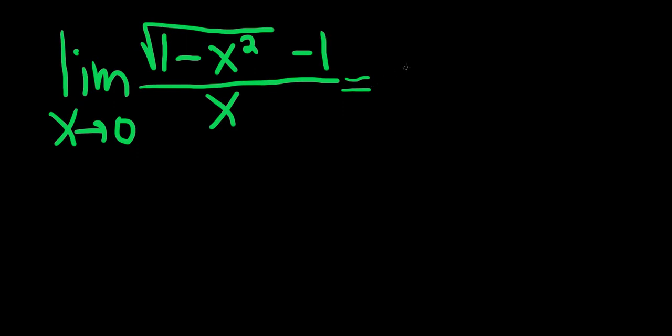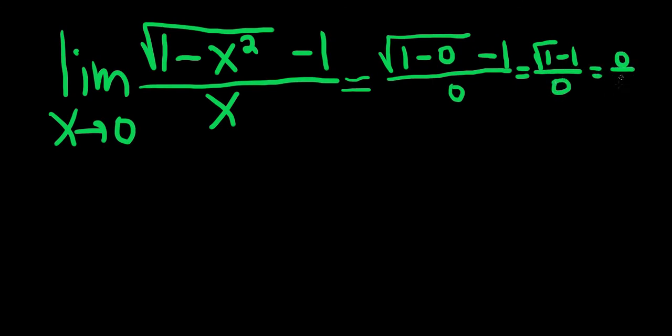If we plug in 0 for all the x's, we get the square root of 1 minus 0, and then here we have a minus 1. On the bottom, we simply get 0. This is equal to the square root of 1 minus 1 over 0. So 1 minus 1 is 0 over 0.